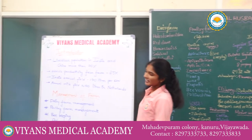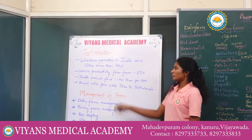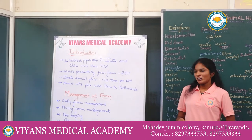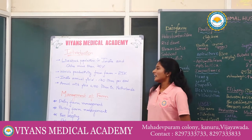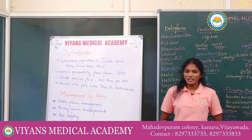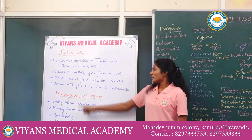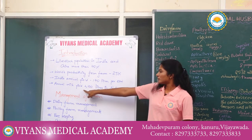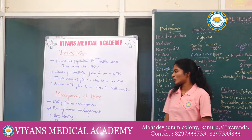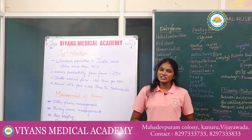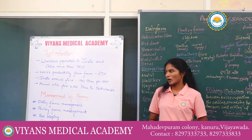World's livestock population — India and China together account for more than 70%. But world productivity of India is less than 24%. Indian annual milk yield is 170 litres per cow, but in Netherlands annual milk yield is 4100 litres per cow. Because of this low productivity, the Indian cow is known as the teacup cow.